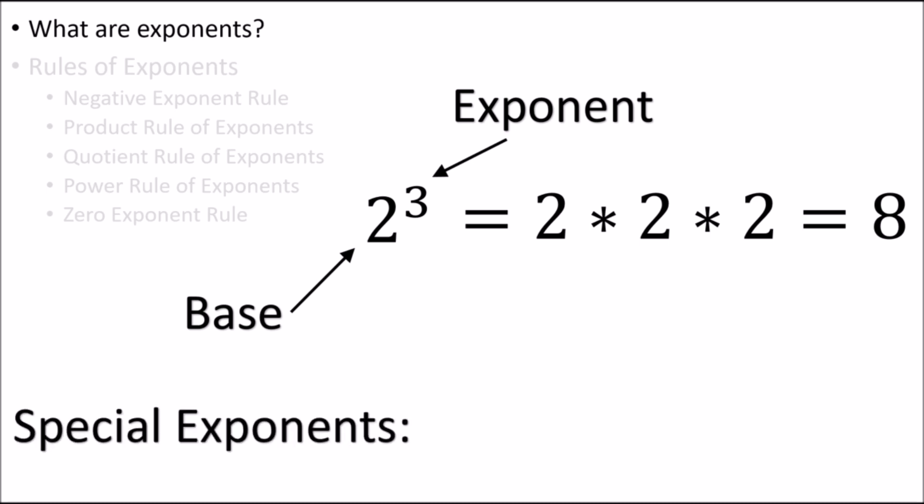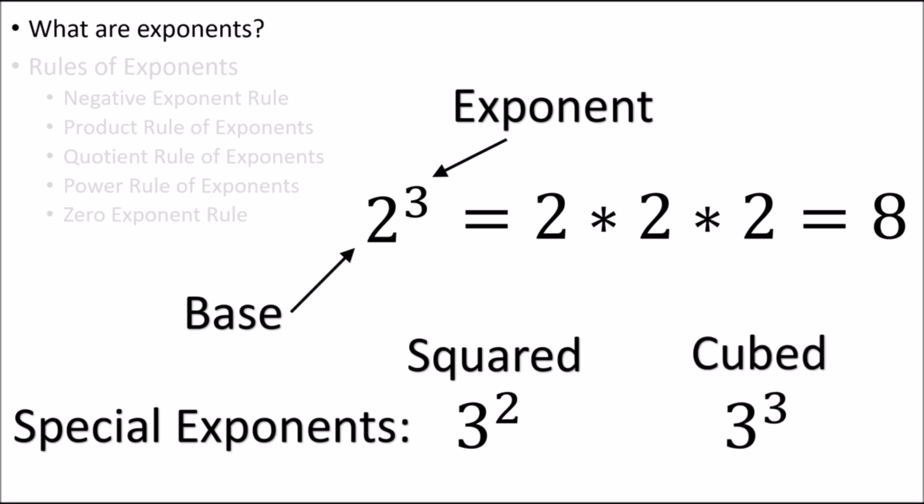We have two specific exponents that are used often enough so that we have special names reserved for them. If we see the exponent 2, we call that squaring a number — here we read this as 3 squared. Another special exponent is the number 3, which we call cubing a number; we can call this exponential term 3 cubed. Let's keep these facts about exponents in mind as we learn about how we'll be tested on exponents.